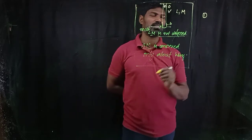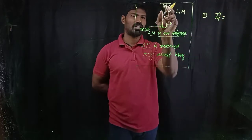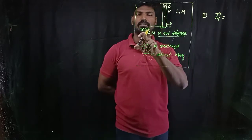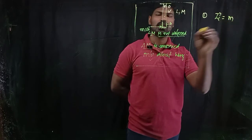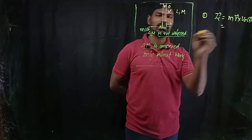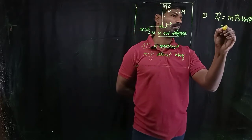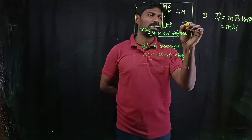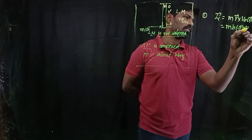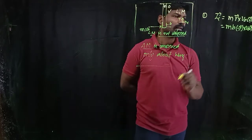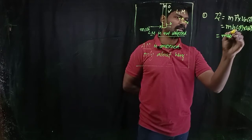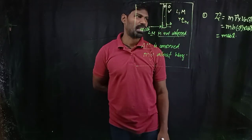Applying conservation of angular momentum about O, I first calculate the initial angular momentum L_i. The rod is at rest but the ball is moving to the right, so it has orbital angular momentum with respect to O. That is M × V₀ × (R⃗ × V⃗), where R is the distance B from O. Taking right as x-axis and up as y-axis, R⃗ = -B ĵ, so L_i = M·V₀·B (−ĵ × î) = M·V₀·B k̂.